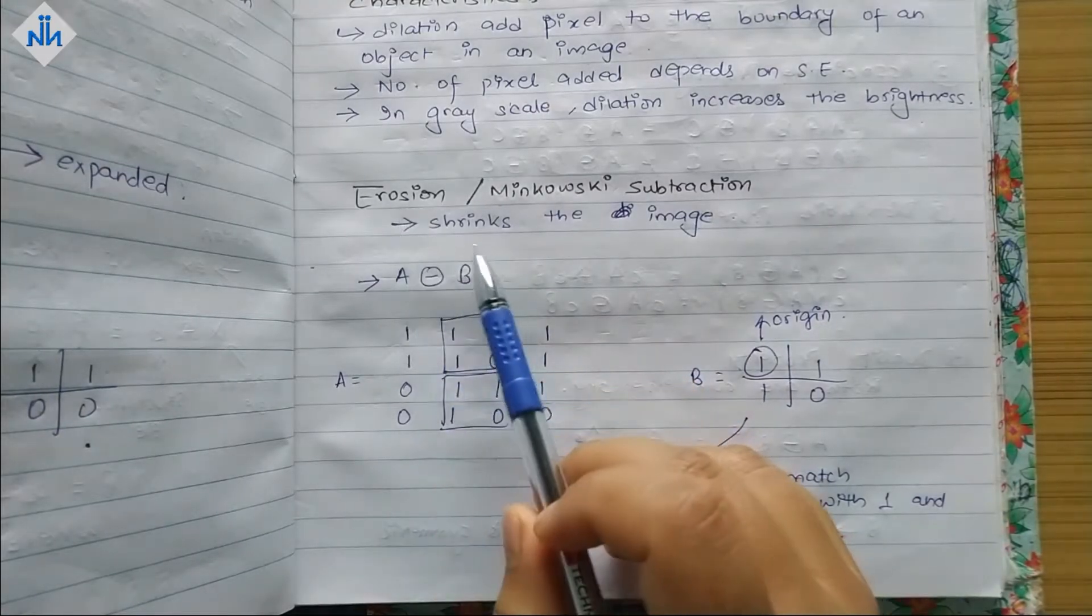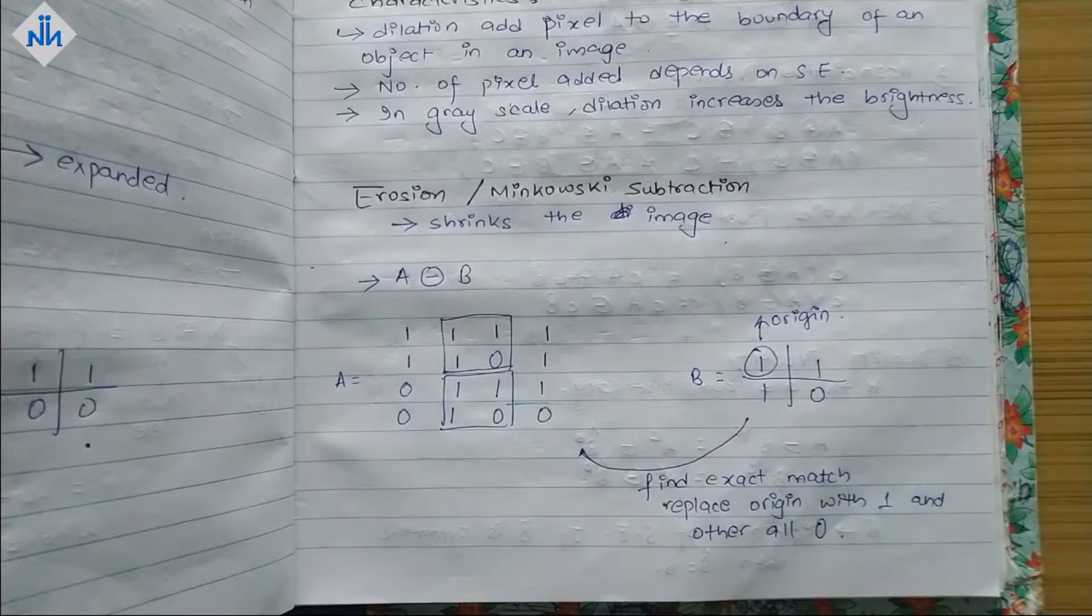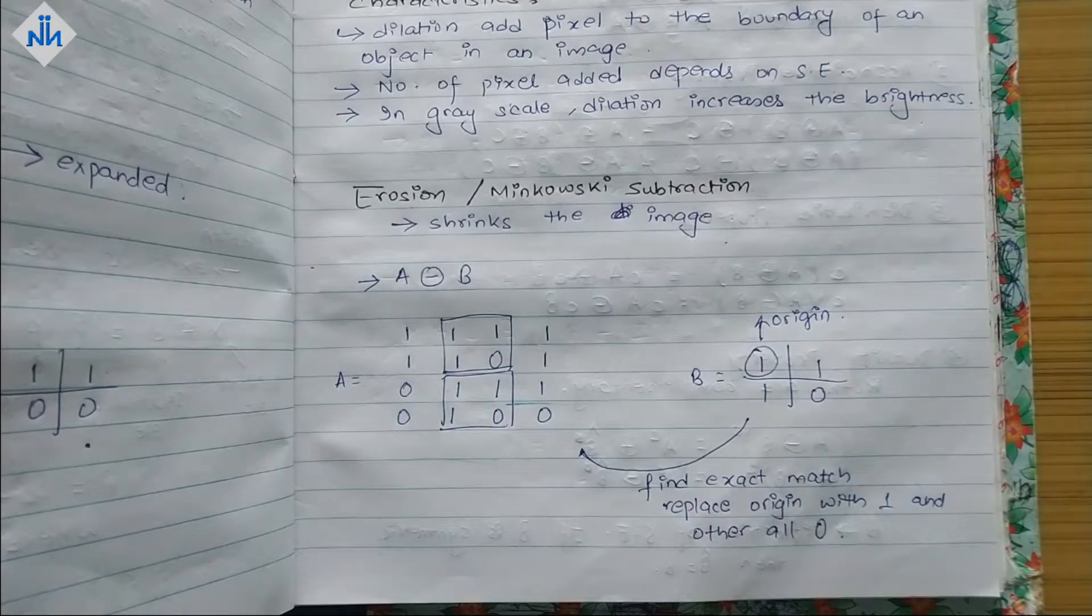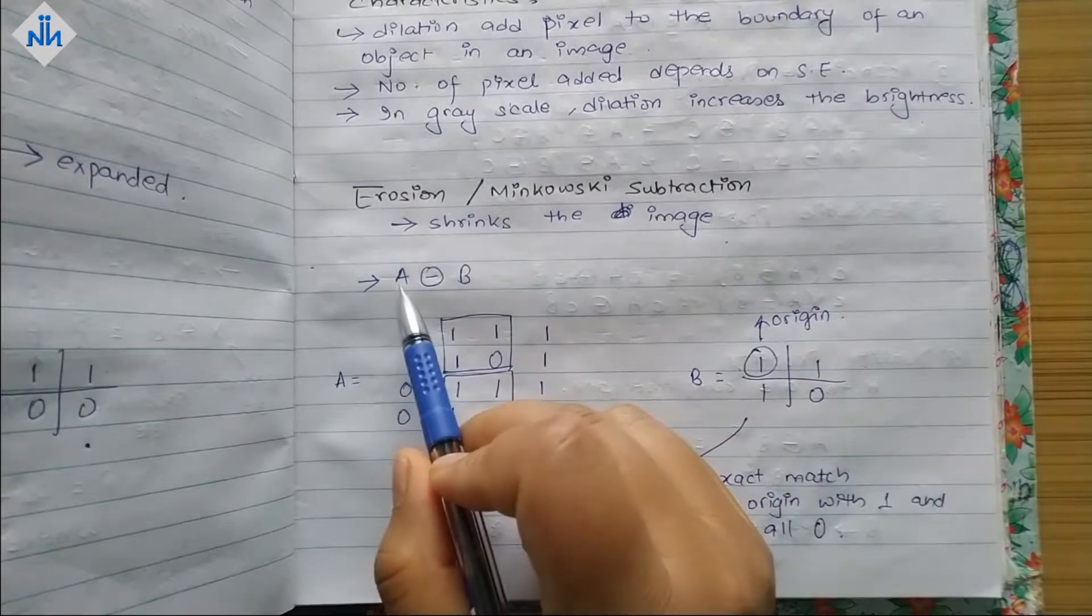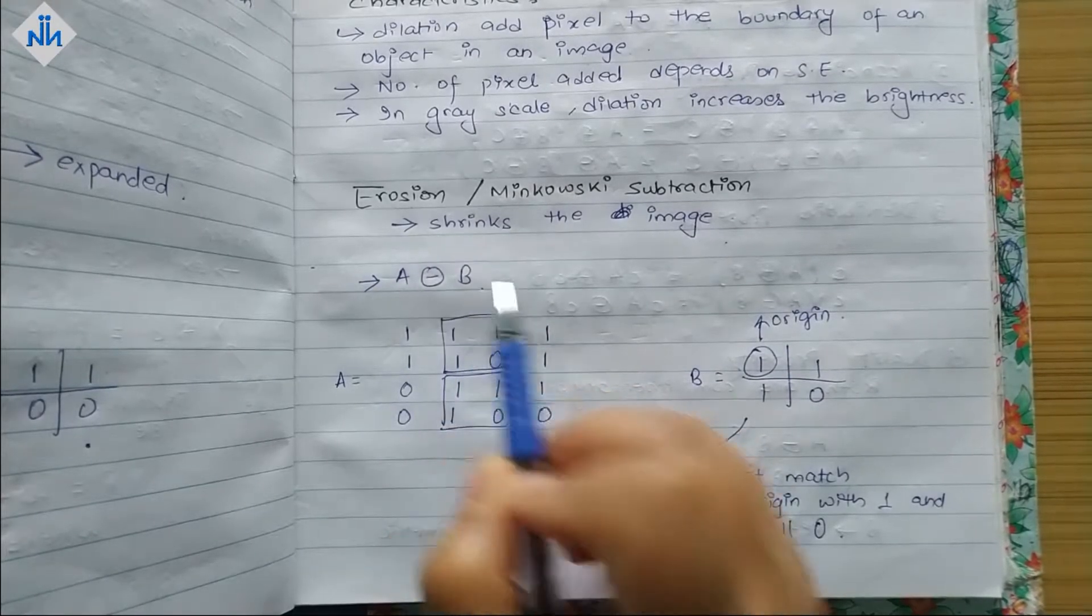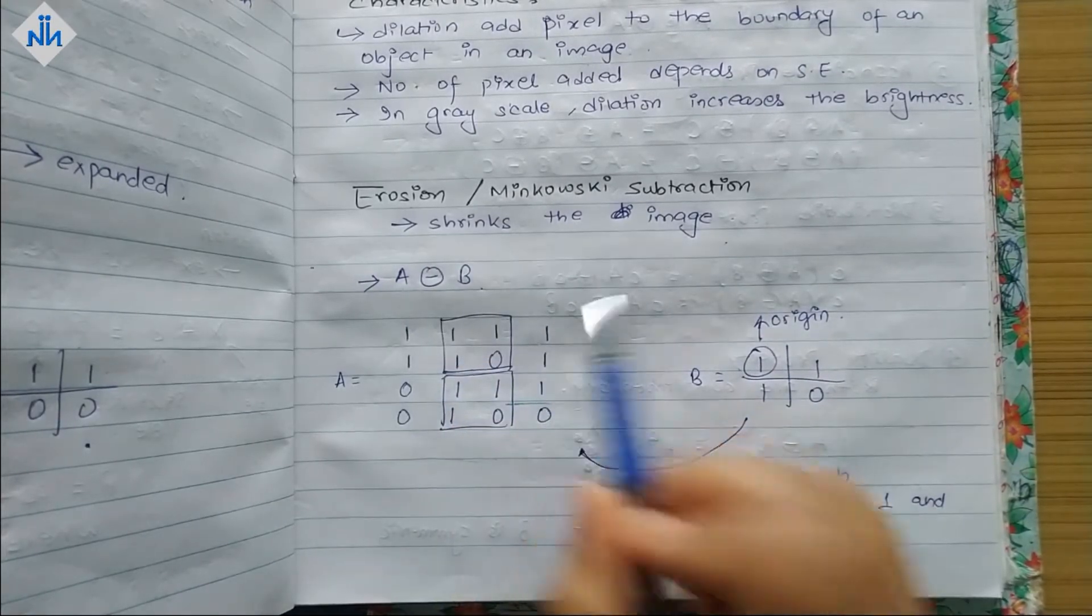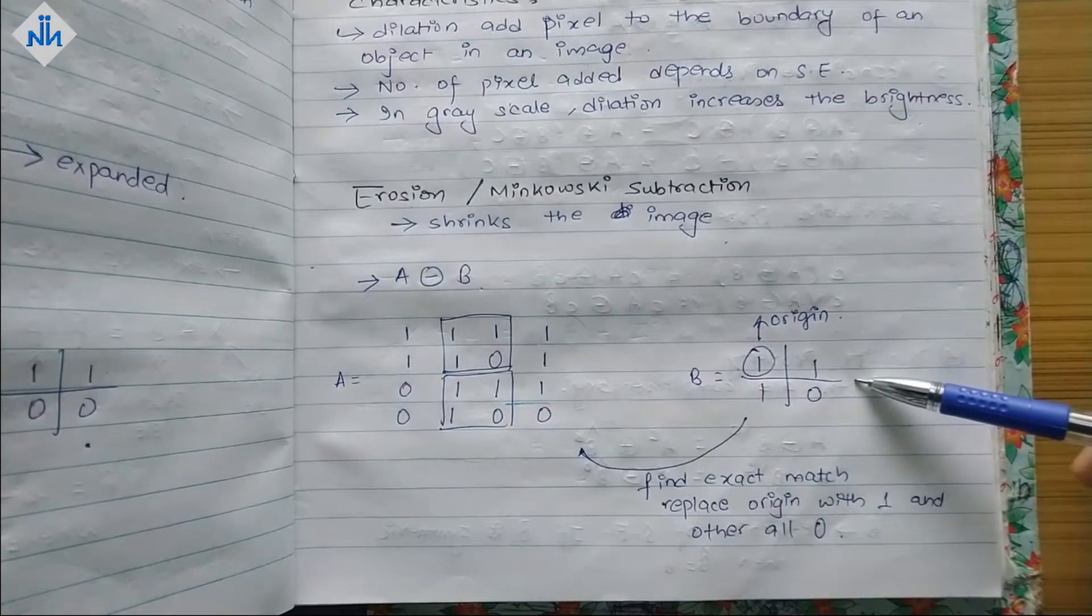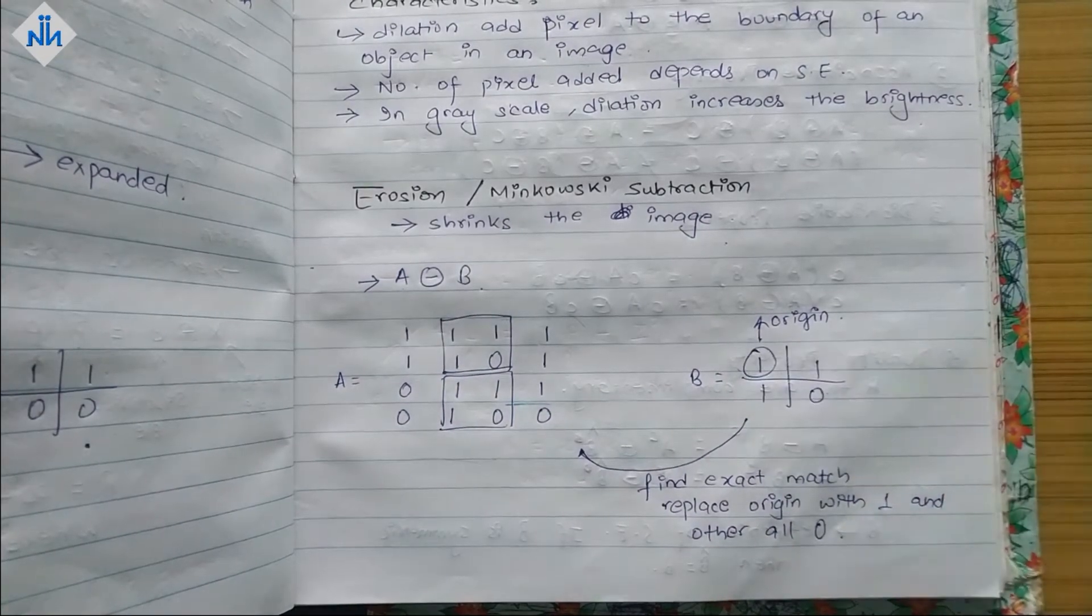So erosion basically shrinks the image. Last time dilation was expanding our image. Now this one is going to shrink our image and it is represented by A minus circle B, that is A erosion B. So suppose this is our image, and this is our structuring element, and this is our origin.